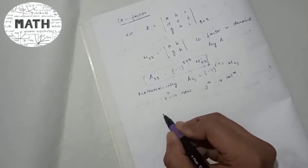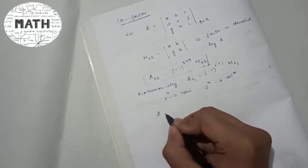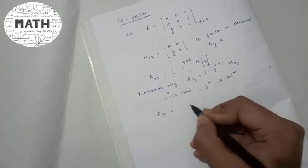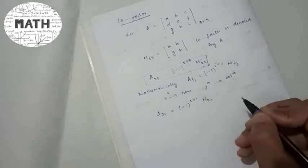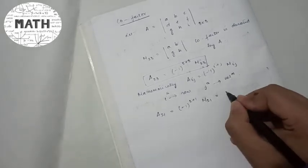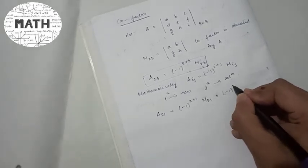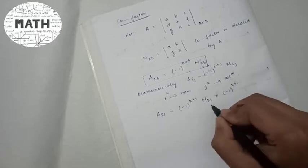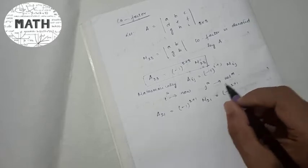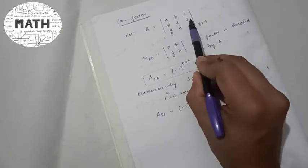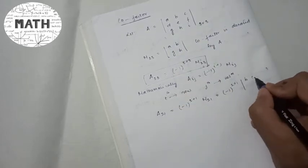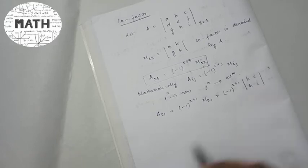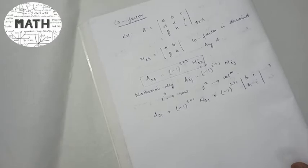For example, if I find A₂₁, it will be minus one to the power two plus one, times M₂₁. Expanding: minus one to the power three, and M₂₁ means second row and first column removed, so what is left is b, c, h, i.